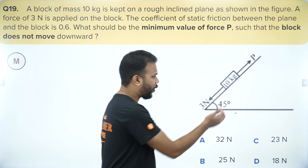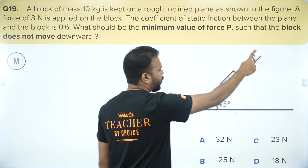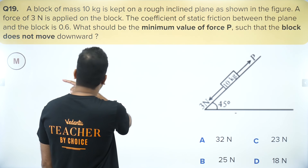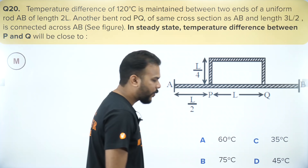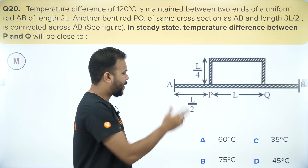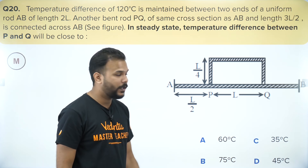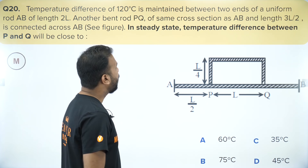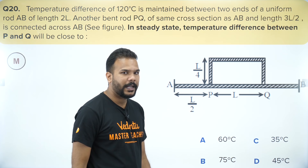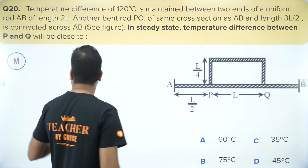A block placed on a surface — find the minimum force required to keep it stationary, so it is from laws of motion. Will be able to do it but not very fast, marking as mediocre. A heat transfer question with temperature difference maintained and heat current flowing — convert to an equivalent electrical circuit, find temperature difference in steady state by treating thermal resistances like current electricity. Takes some time but not very difficult, marking as mediocre.